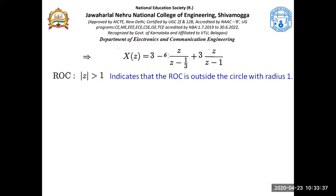The ROC is |Z| greater than 1, meaning it is outside the circle with radius 1. Since it is outside, the time domain signals have to be positive time exponentials. Now, there is a constant 1 here — what is the inverse Z transform of 1? It is delta(n), the unit impulse function. The Z transform of delta(n) is 1, so applying the inverse Z transform to 1 gives delta(n).